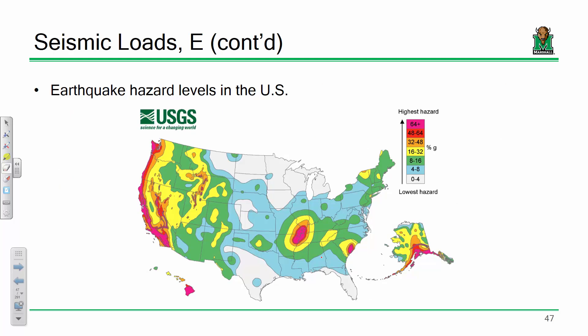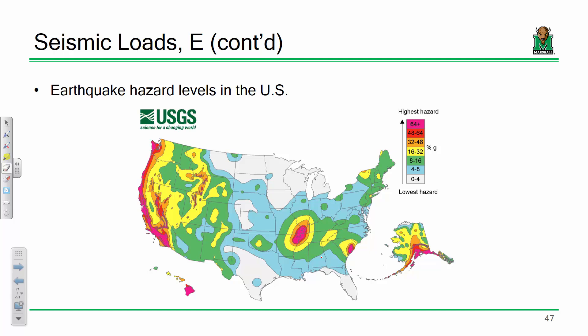Dependent on where you are in the United States, you can have different seismic demands. California and Nevada have very significant seismic demands. Western Kentucky, near a major fault line, also has significant seismic demands — it's not highly active, but if it were to go, it would be bad. Alaska and Hawaii are obviously seismically active as well.